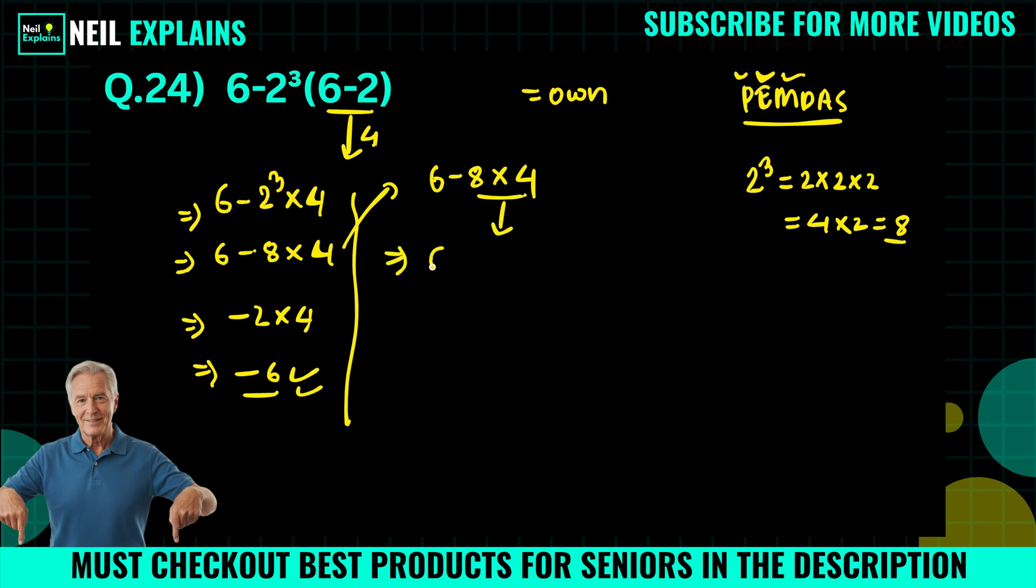Now we rewrite: 6 minus 8 times 4. 8 times 4 equals 32.